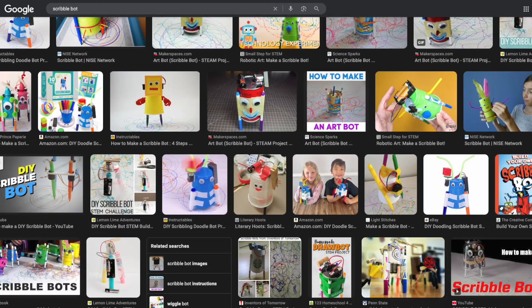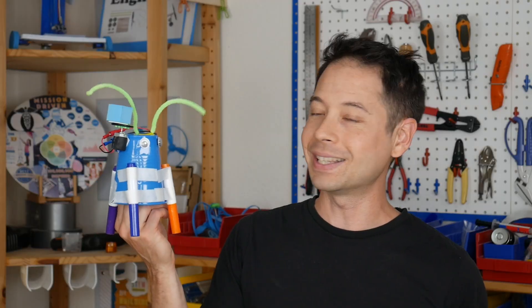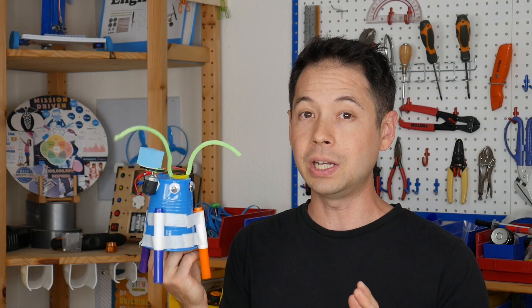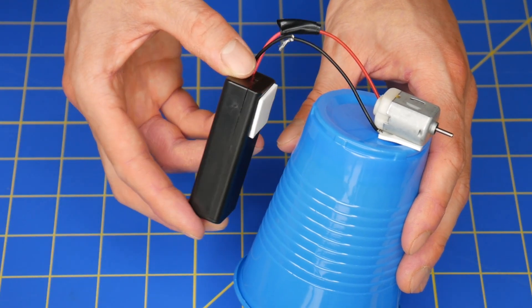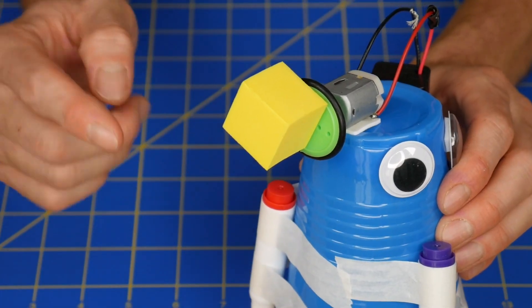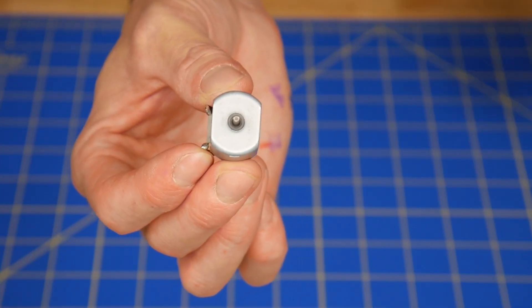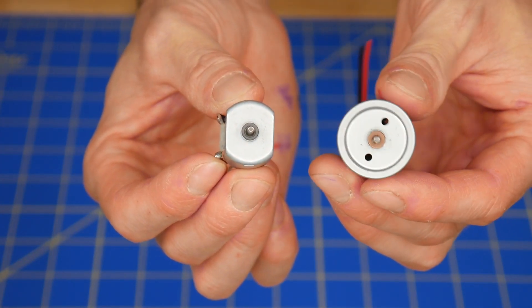There are tons of different ways to make this project but I'm going to show you how to build this design which I think is the best because the materials work really well and there are three variables that you can experiment with that allow you to meaningfully change the drawing patterns it creates. So first let me show you how to build this, then I'll go over the variables that you can adjust to change the drawing patterns, and finally I'm going to take a deeper dive into the individual materials that make this project work so well.